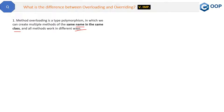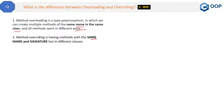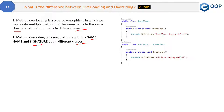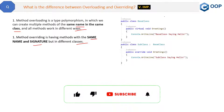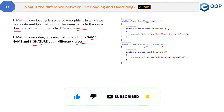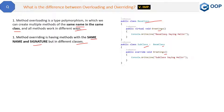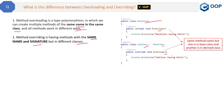Now let's see what method overriding is in detail. Method overriding is having methods with the same name and same signature but in different classes. In this code example, you can see we have one base class and one subclass which is derived from the base class. Both classes have a greetings method — the name is the same and the signature is also the same. One is in the base class and another is in the derived class.